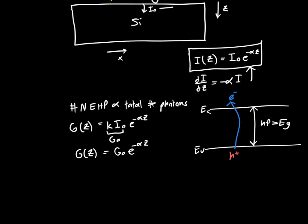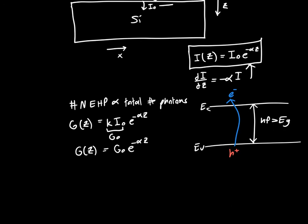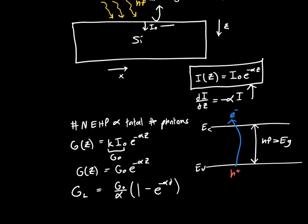And so if we're not interested in how the semiconductor behaves as a function of z, and we're interested in just how it behaves as a function of x, then we can just perform this integral, and we'll get G independent of z, basically. So G will just be a constant, and we call that GL. So if we perform this integral, we'll just get G0 over alpha times 1 minus e to the alpha d, where d is just the depth of the semiconductor.